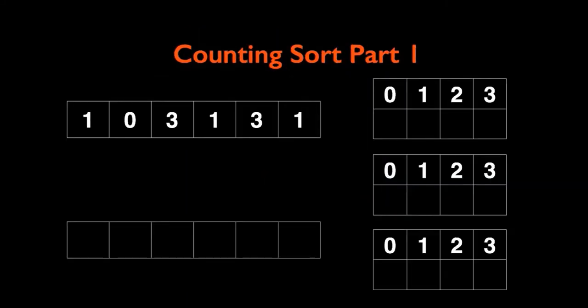The first part or the first step of counting sort will be counting the occurrence of each number. For this example, there is only one occurrence of 0 and three occurrences of 1, and there are two occurrences of 3 and zero occurrences of 2.